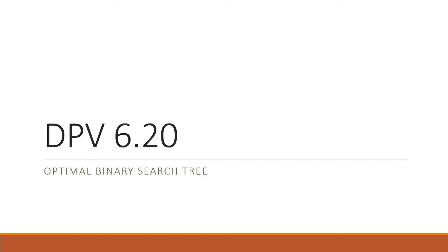Welcome to another session on dynamic programming. Today we're going to be talking about DPV 6.20, which deals with optimal binary search tree.